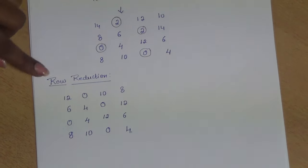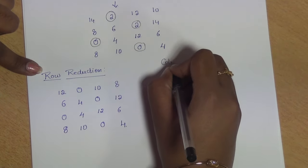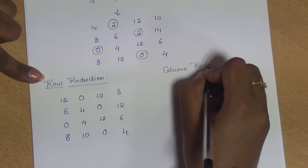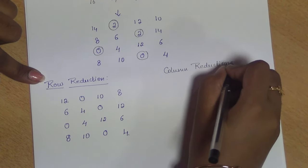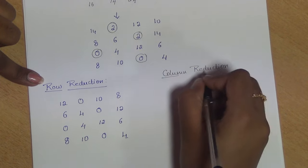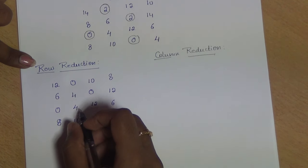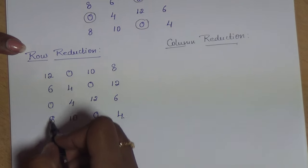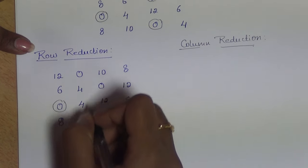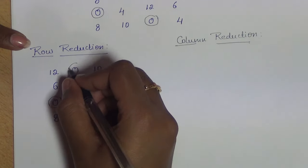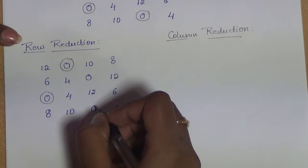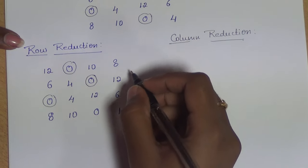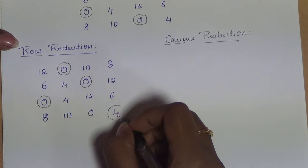Next, we proceed with the column reduction. In the column reduction, we have to find the smallest value in each column. In the first column it is 0, in the second column it is again 0, in the third column we have two 0s so we can pick either one, and in the fourth column it is 4.